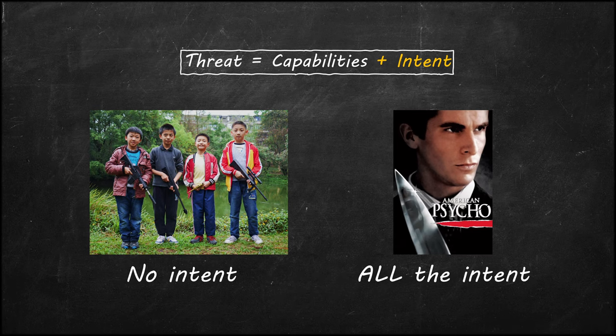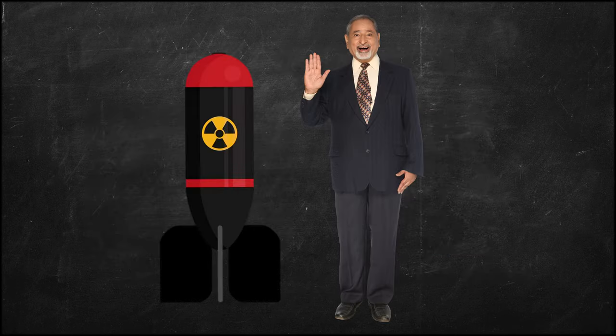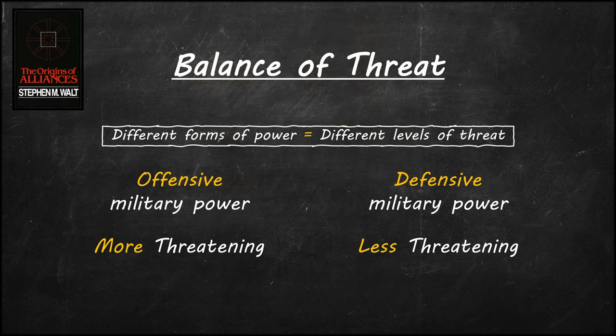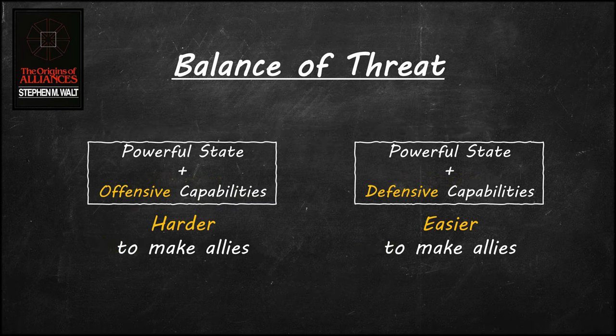Intent plays an important part in how people and states perceive threats. Of course, if a person had a nuclear weapon, even without the intent to use it, that alone is quite threatening because of just how dangerous it is. Because the balance of threat theory moves away from strictly analyzing power to threat perception, it allows for a more nuanced analysis of capabilities. In the balance of threat theory, different capabilities pose different levels of threats. States with offensive military capabilities would be perceived as more threatening than those with predominantly defensive military capabilities. A very powerful state with defensive military capabilities could make alliances more easily than a less powerful state with predominantly offensive military capabilities. The traditional balance of power theory could not even consider this as a possibility.